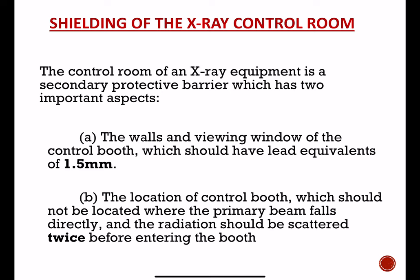The x-ray control room is a secondary protective barrier with two important aspects. First, the wall and viewing window of the control board should have a lead equivalence of 1.5 millimeter. Second, the location of the control board should not be where the primary beam falls directly — the radiation should be scattered twice before entering the booth.